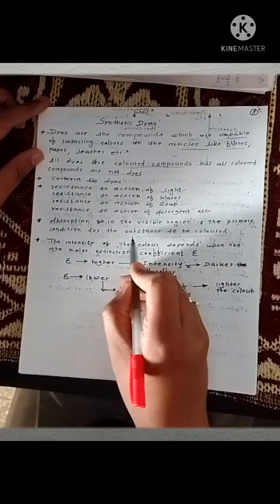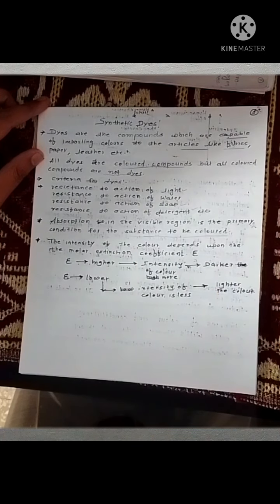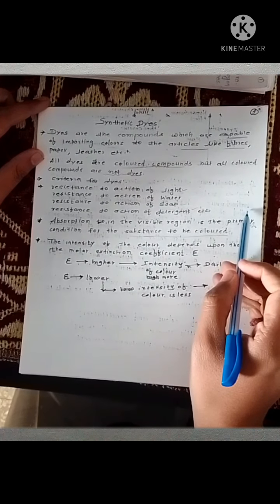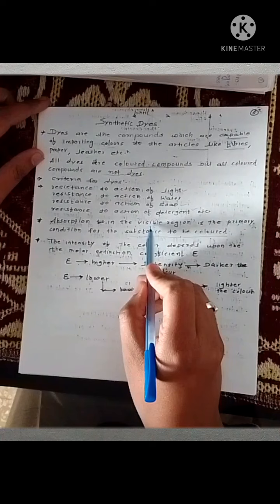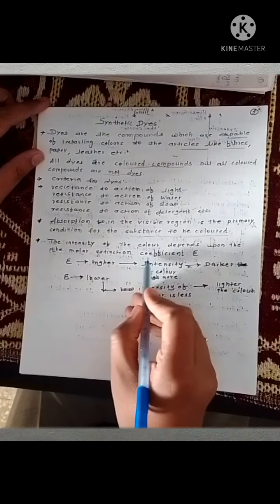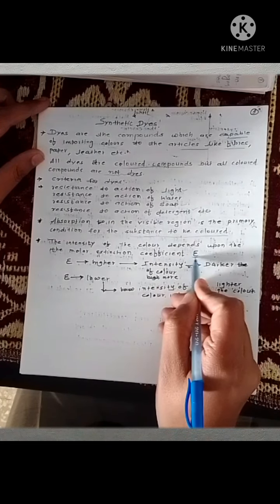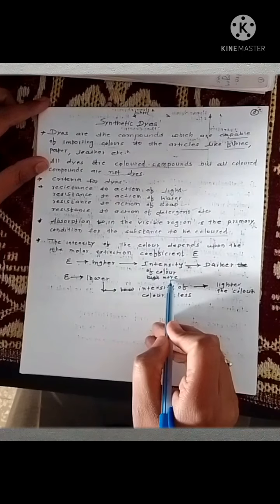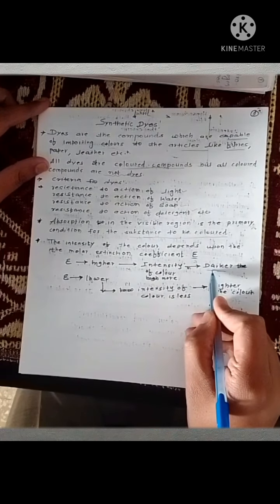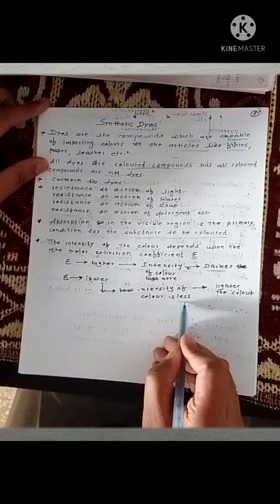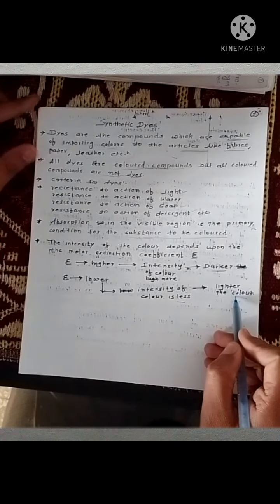When we say a substance is yellow or blue in color, it means that absorption of that substance is taking place in the visible region. The intensity of color depends upon the molar extinction coefficient, that is epsilon. If the epsilon value is high, the intensity of color is more — the color is darker. If the epsilon value is low, the intensity of color is less, meaning a brighter or lighter color, or fading of color.